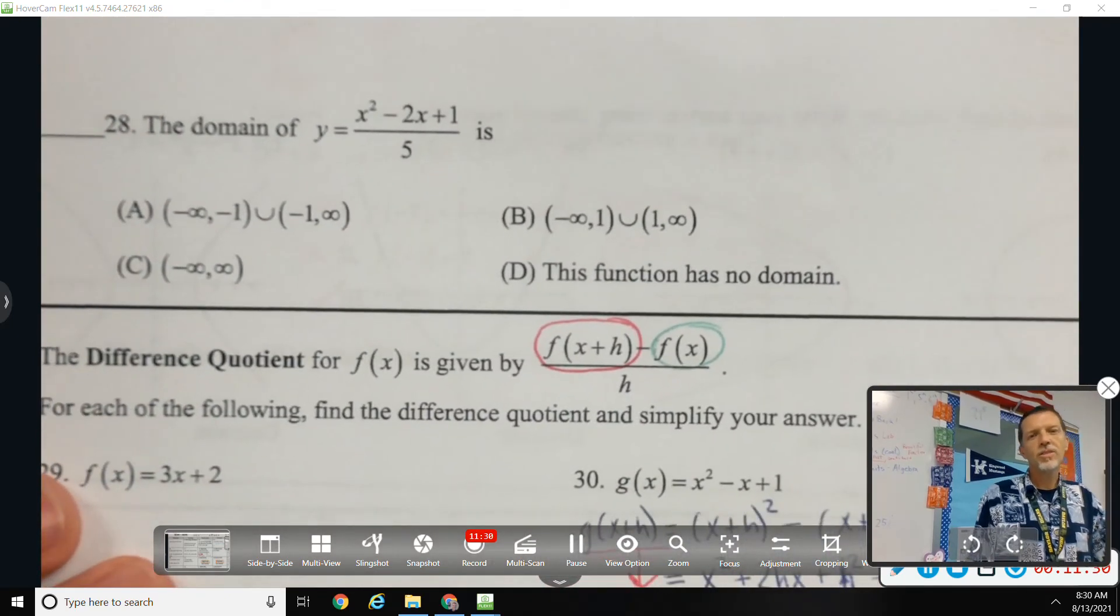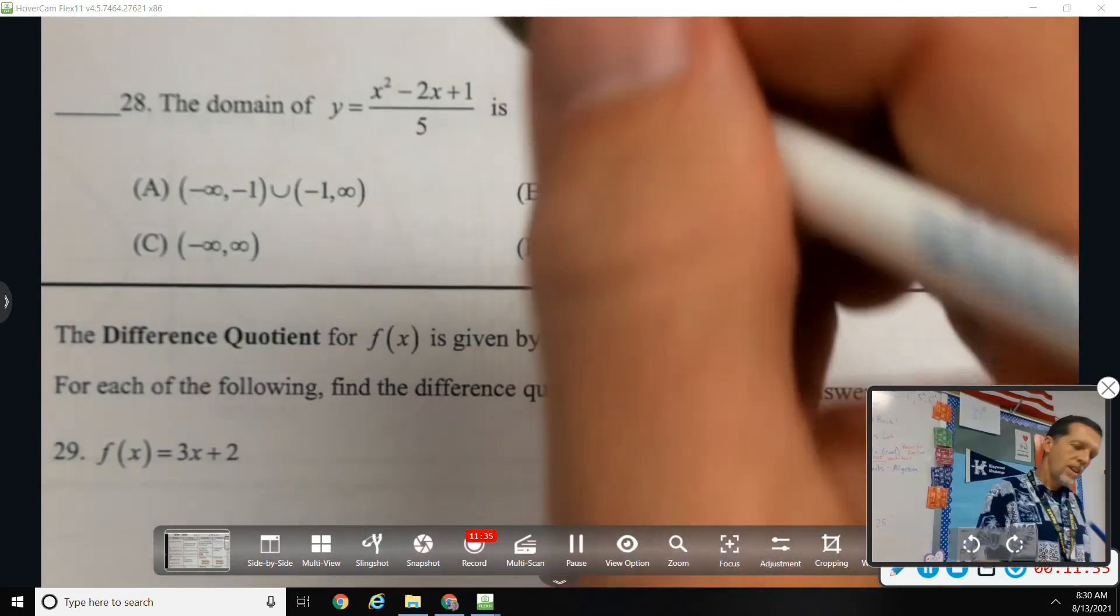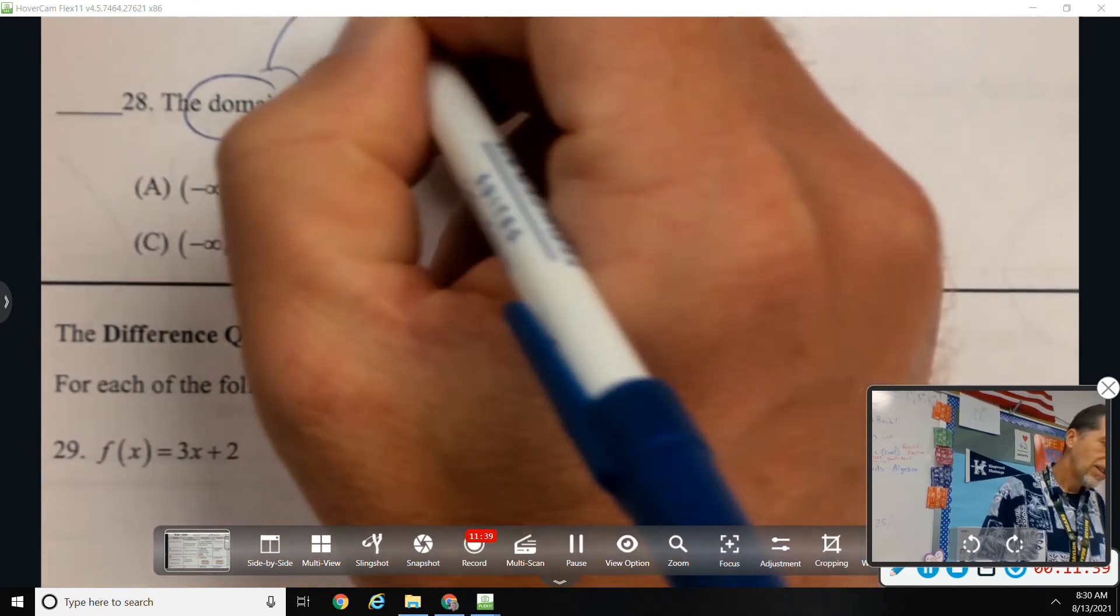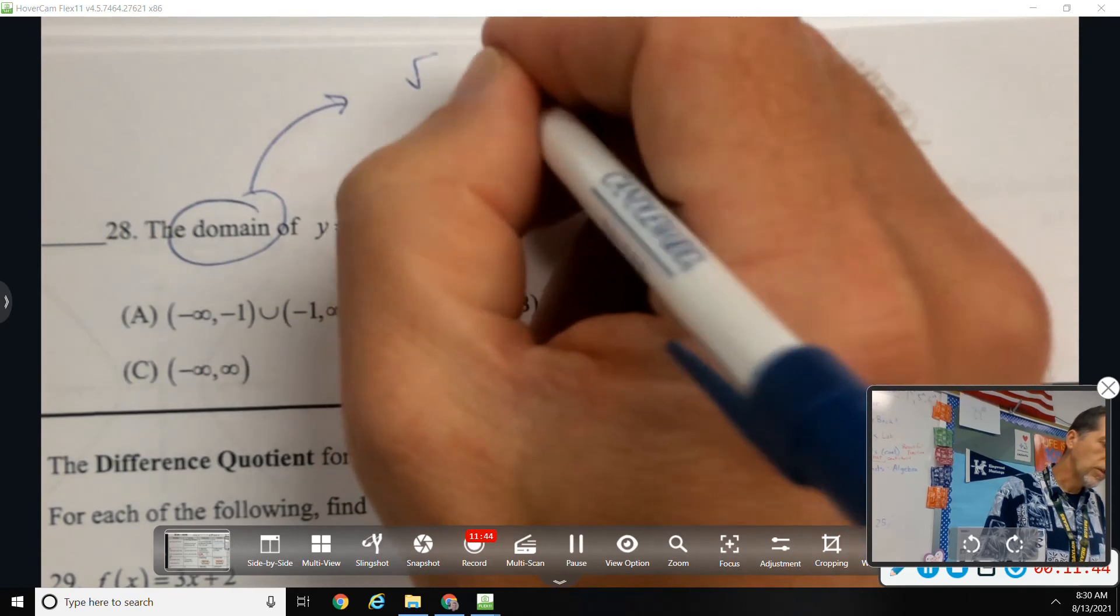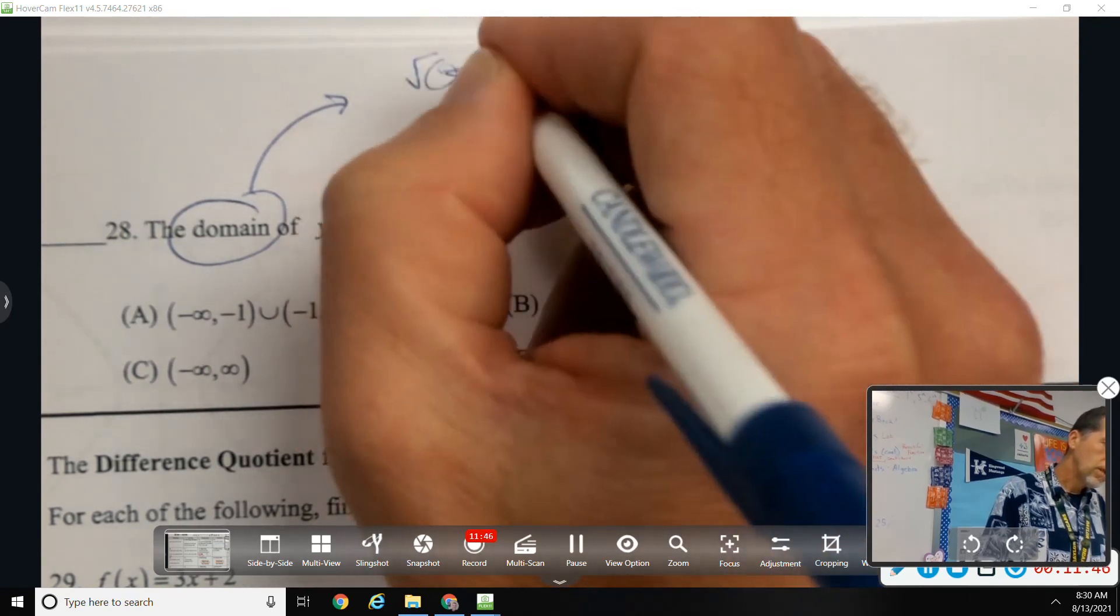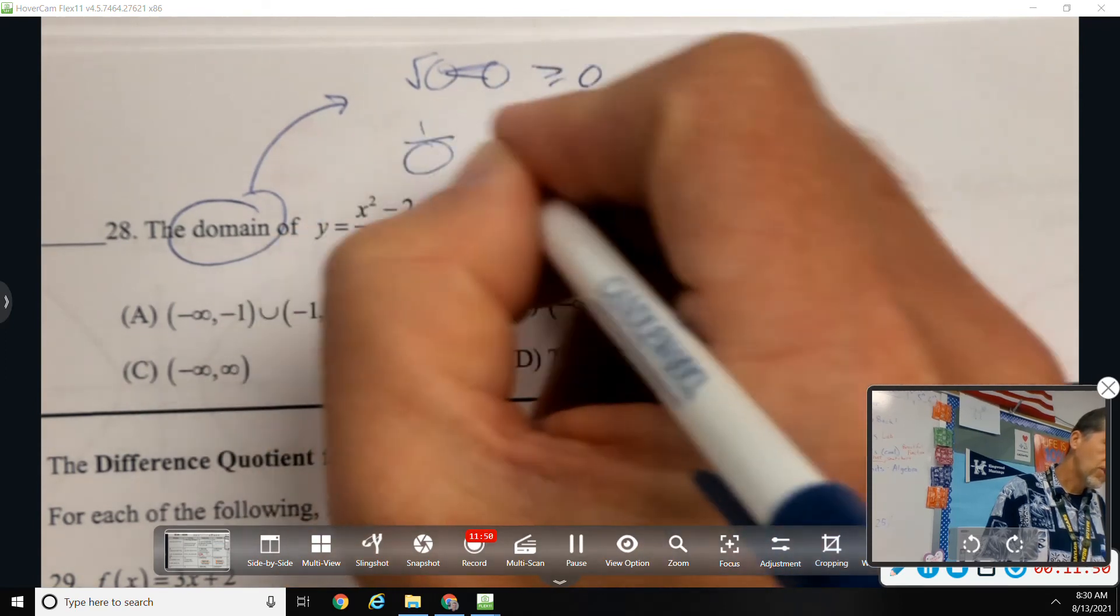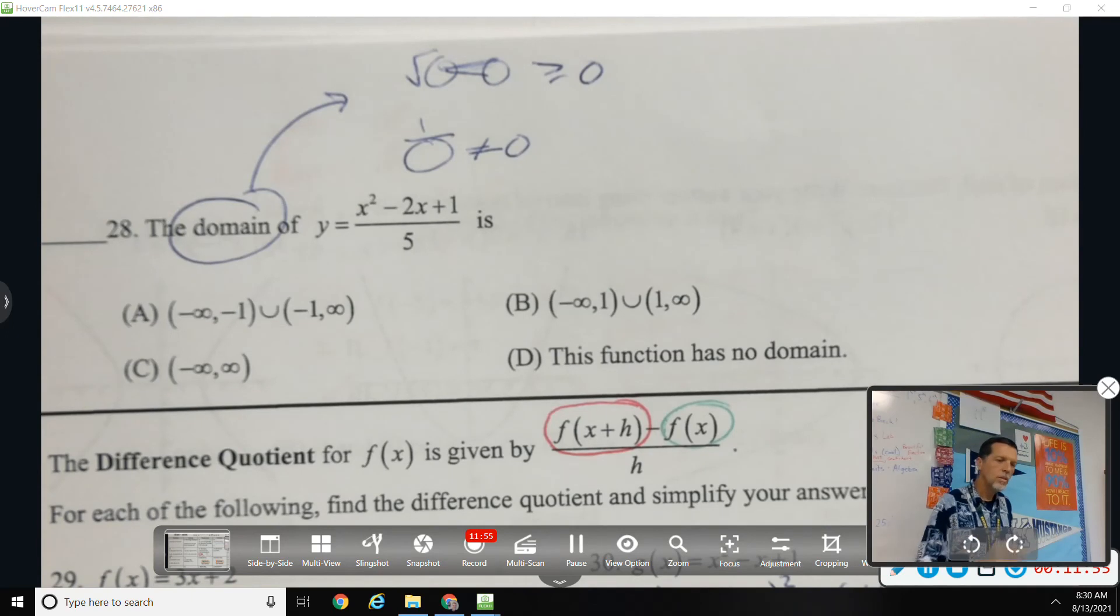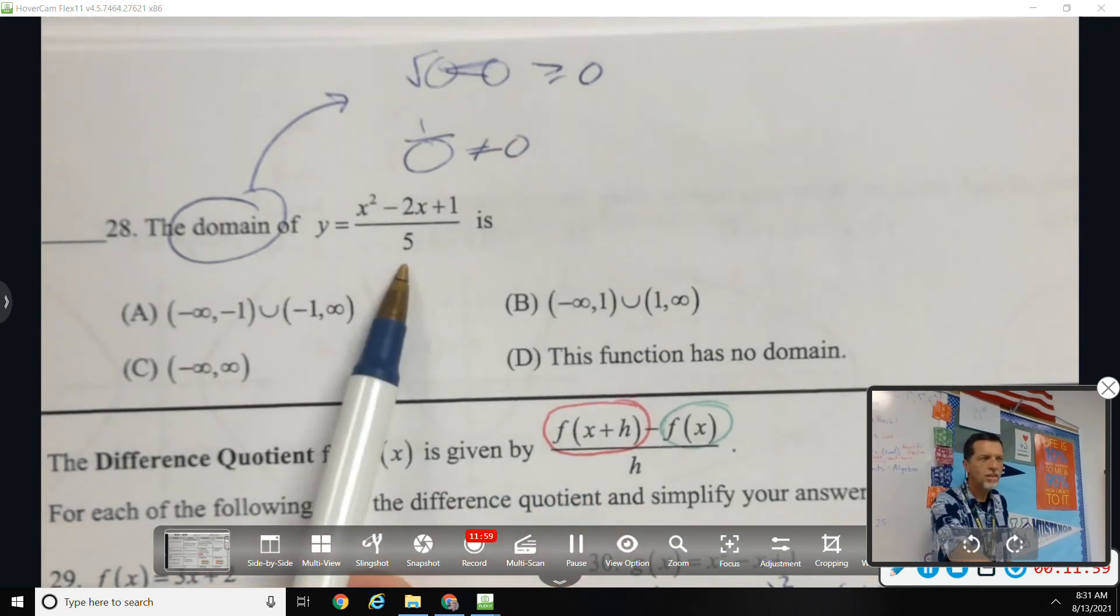The domain. Okay, this one's a little bit tricky, misleading almost, because the only thing we're worried about with domain is: square roots, whatever's in the square root has to be greater than or equal to 0. Fractions, the bottom can't be 0. So that's the only thing I'm worried about. Well definitely no square roots, so I'm not worried about that. There is sort of a fraction, but the only thing down there is 5, and 5 is never going to be 0.